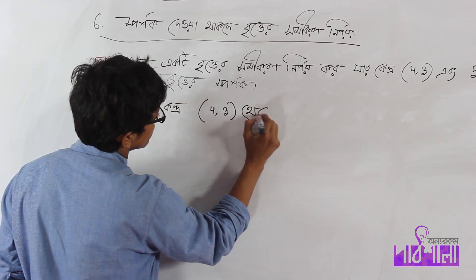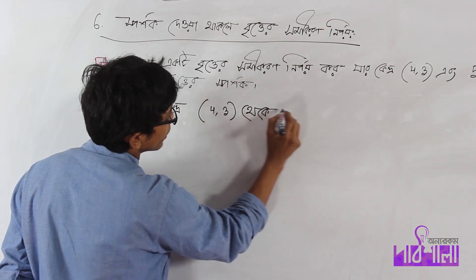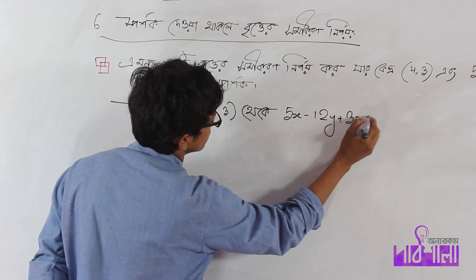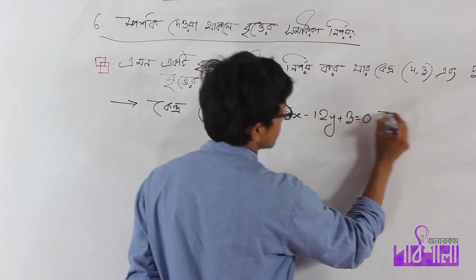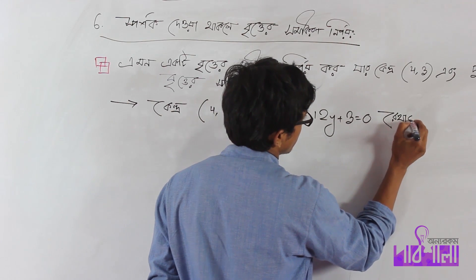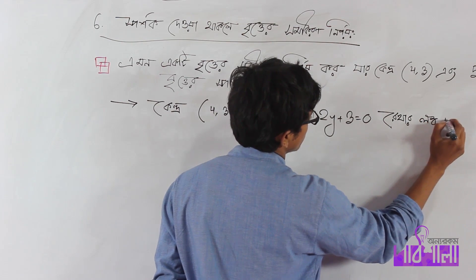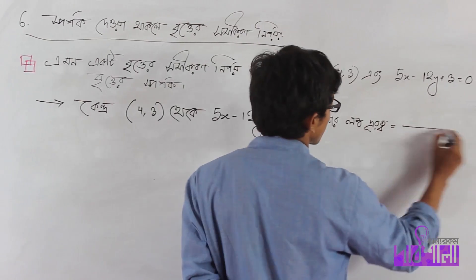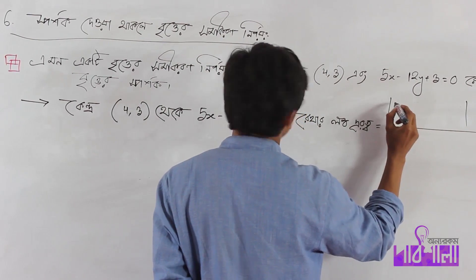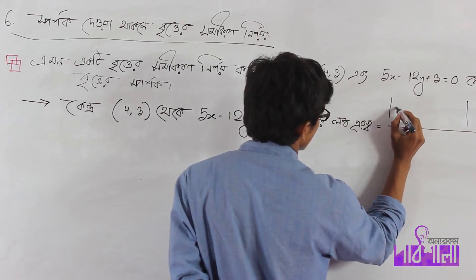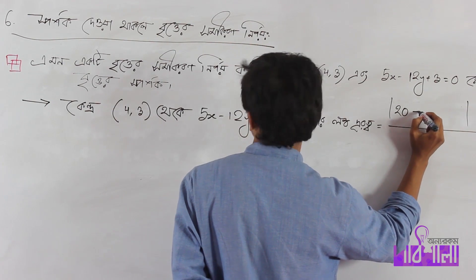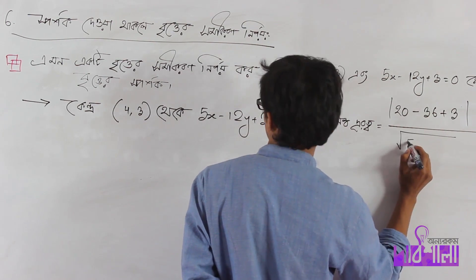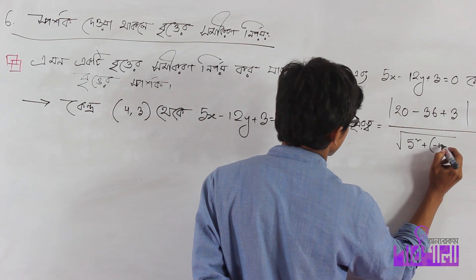The equation is 5x - 12y + 3 = 0. Modulus of 5 into 4, that is 20 minus 3 barang chhoteish plus 3, root over 5 square plus minus 12 square.